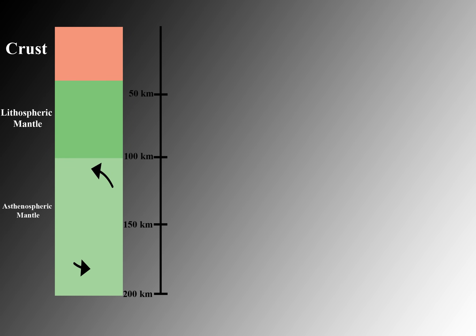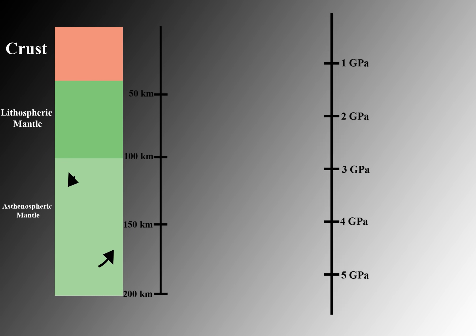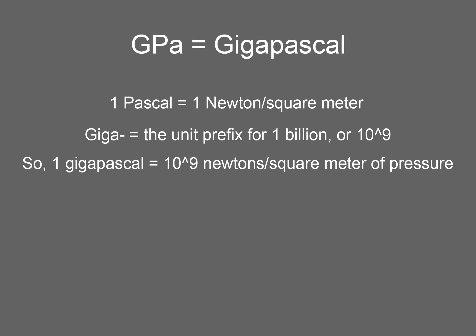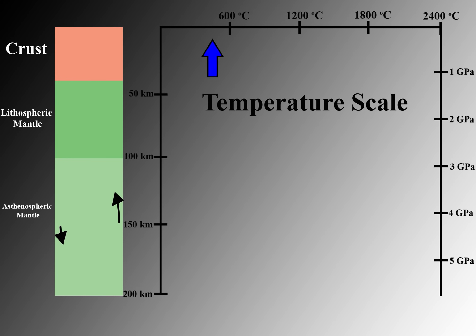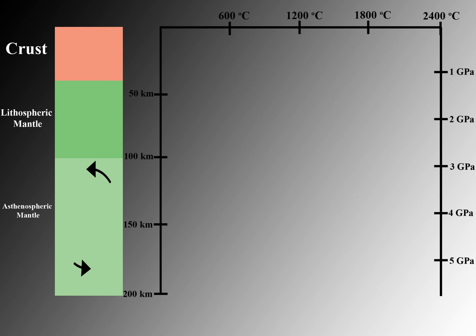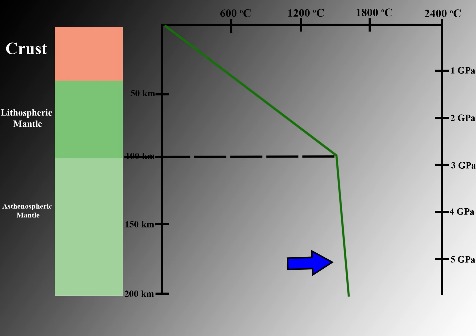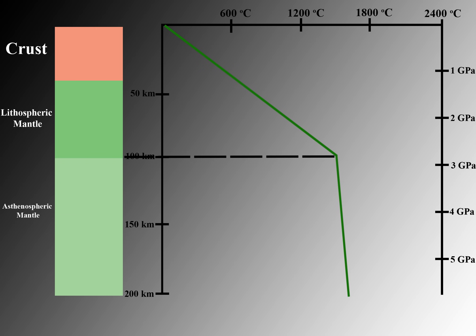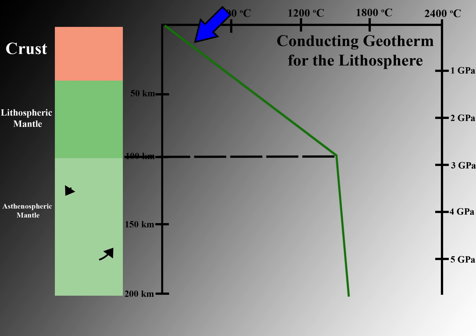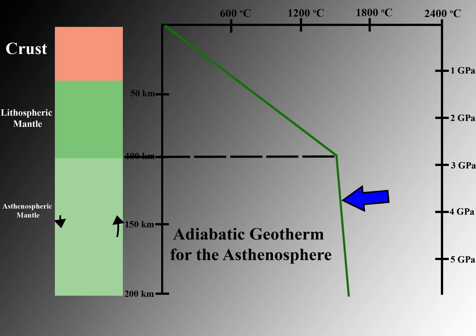With a depth scale in place, note that the lithosphere generally extends to 100 kilometers of depth. A pressure scale can also be added, as depths in the earth are easily converted to pressure — most geoscientists think in terms of gigapascals, where a pascal is the SI unit of pressure equal to 1 newton per square meter. Finally, a temperature scale allows us to plot the geotherm, a line describing how temperature increases with depth. Notice how the geotherm's slope abruptly changes at the lithosphere-asthenosphere boundary: heat is transferred via conduction in the lithosphere, leading to widely varying temperatures, while convection in the asthenosphere leads to nearly constant temperatures with depth. The lithosphere's geotherm is conductive; the asthenosphere's geotherm is adiabatic.